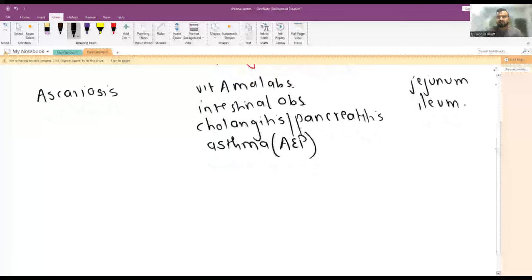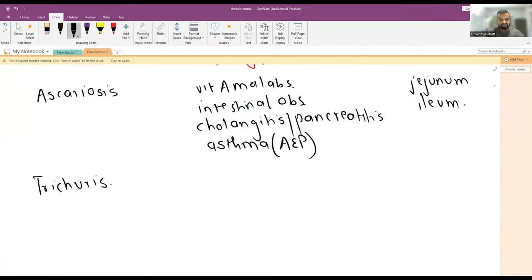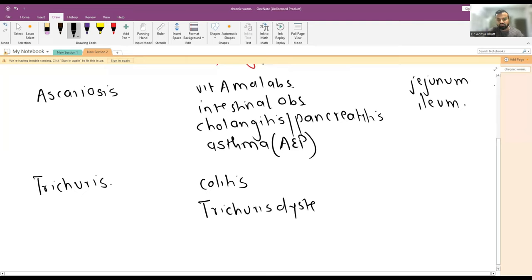Trichuris can cause colitis and intestinal inflammation. Along with this, it may lead to Trichuris dysentery syndrome. This dysentery and diarrhea or loose stool will be either acute or even chronic long-term. It lives in the colon, so it leads to colitis.